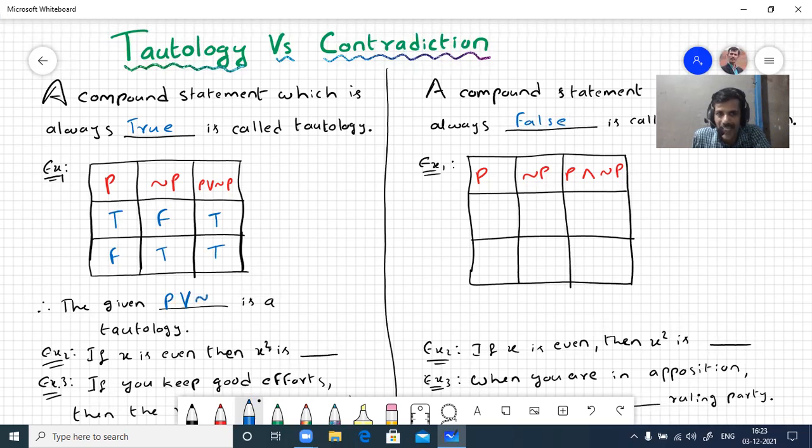Now similarly we'll write the truth table. Here it can be true or false, then negation can be false or true. P and negation P, this is conjunction. It is true only when both statements are true.